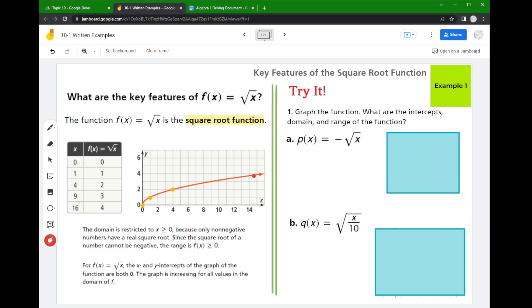So let's talk about the try it. The try it asks us several things. It says to graph the function which I have hidden under these handy-dandy boxes, and it wants to know what are the intercepts, the domain, and the range. So if I'm looking at this I see a minus here.